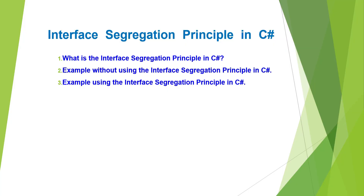Hello friends, welcome back to SOLID Design Principle video series. This is part 5 of this series and in this video I am going to discuss Interface Segregation Principle in C-Sharp with examples. Please watch our previous video where we discuss Liskov Substitution Principle in C-Sharp. The letter I in SOLID stands for Interface Segregation Principle, also known as ISP. As part of this video we are going to discuss the following pointers.